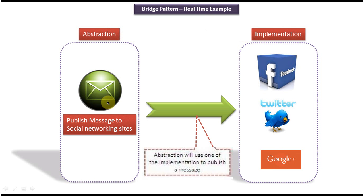On the left side you can see the abstraction layer. Suppose I want to publish some message to the public. Then what I can do is I can use any one of the social networking sites which you are seeing on the right side. So I can use Facebook, Twitter, or Google Plus to publish my message to the public. So all of these are social networking sites. In this case, the abstraction is using one of these implementations to publish a message to the public. Suppose later I want to add a new implementation in the implementation layer — I can do that without affecting the abstraction layer. So this is the best example of bridge design pattern.